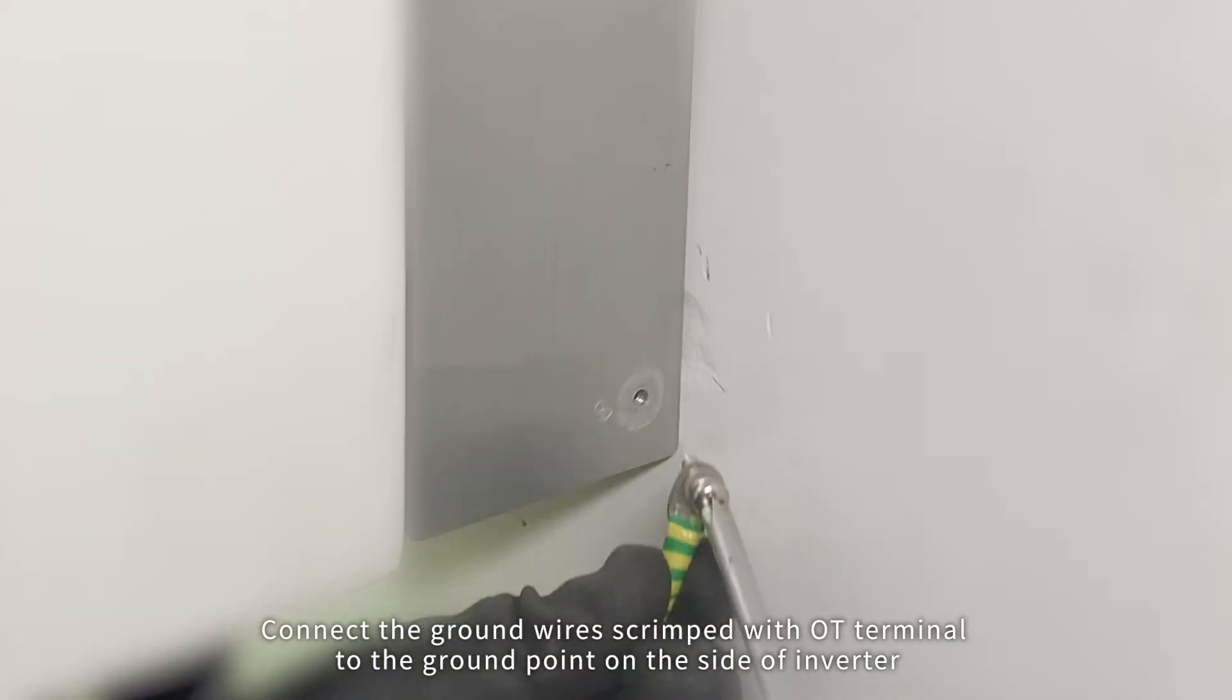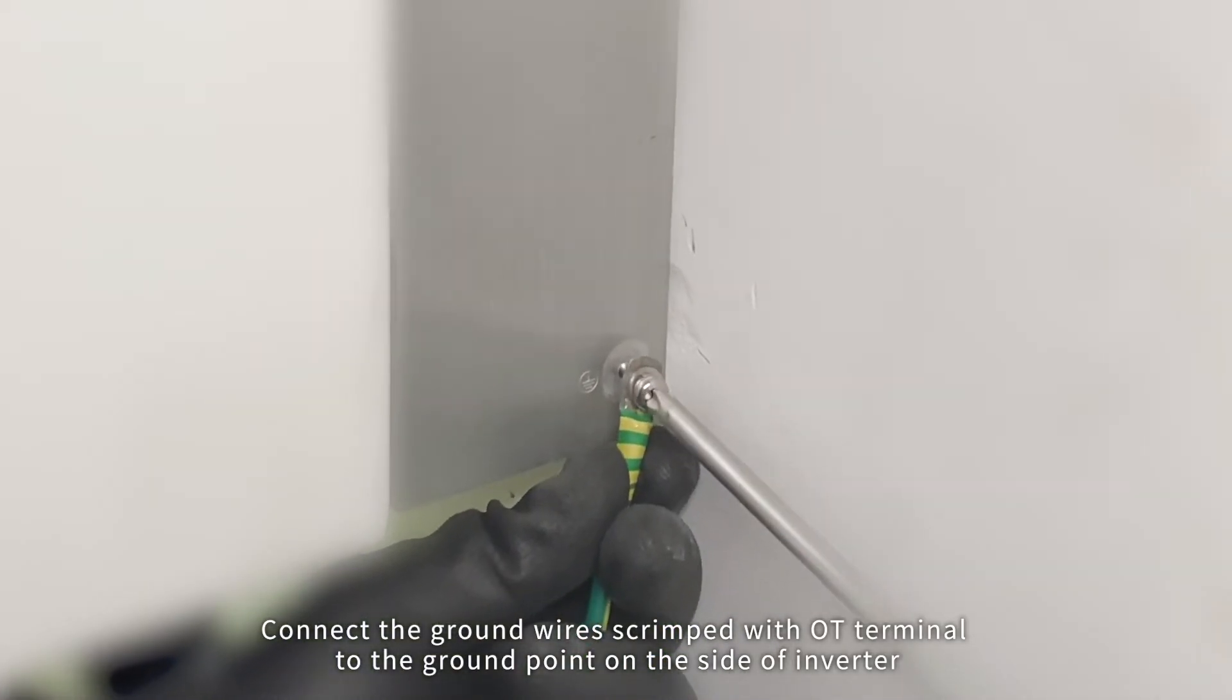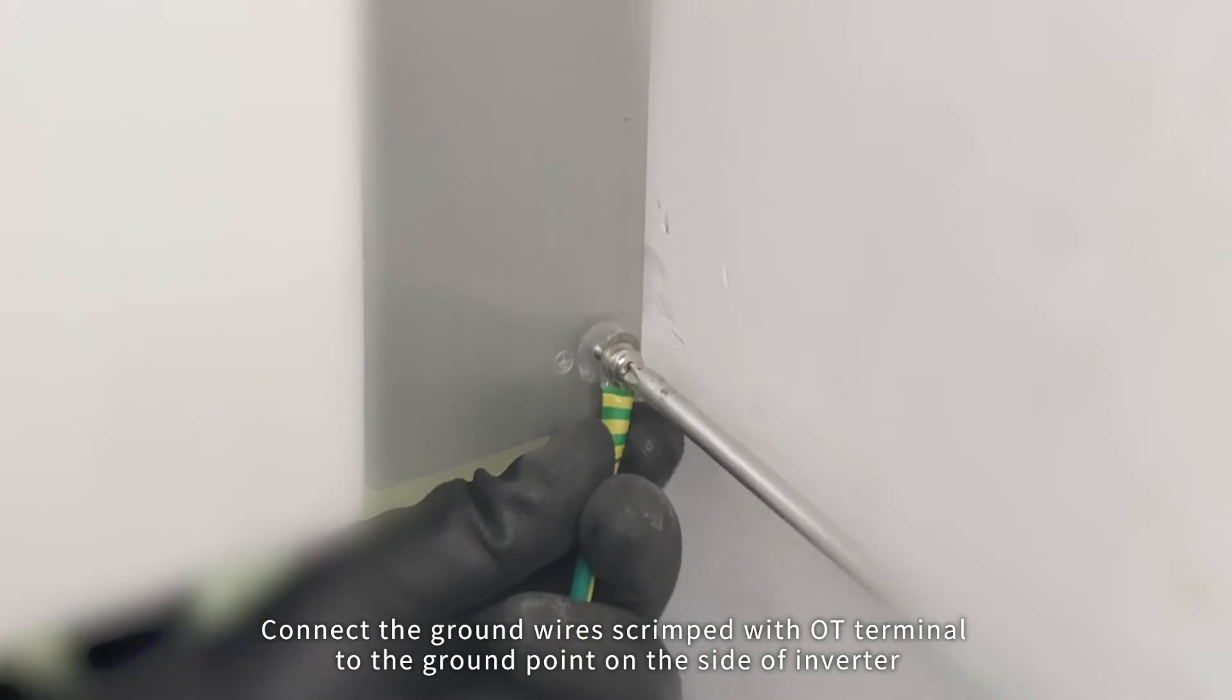Cable connection. Connect the ground wires crimped with OT terminal to the ground point on the side of inverter.